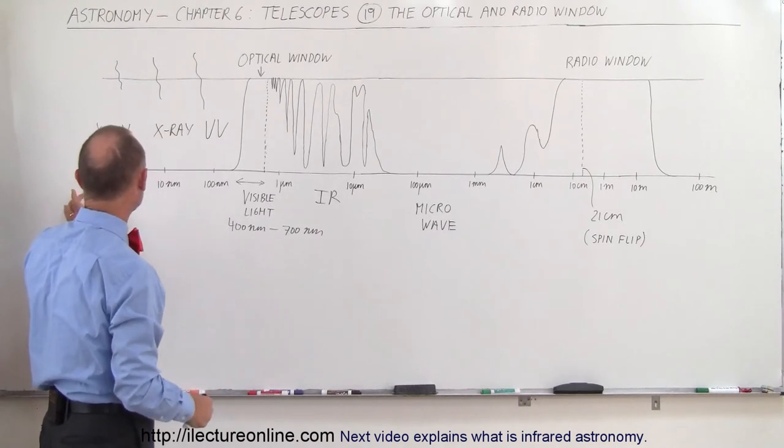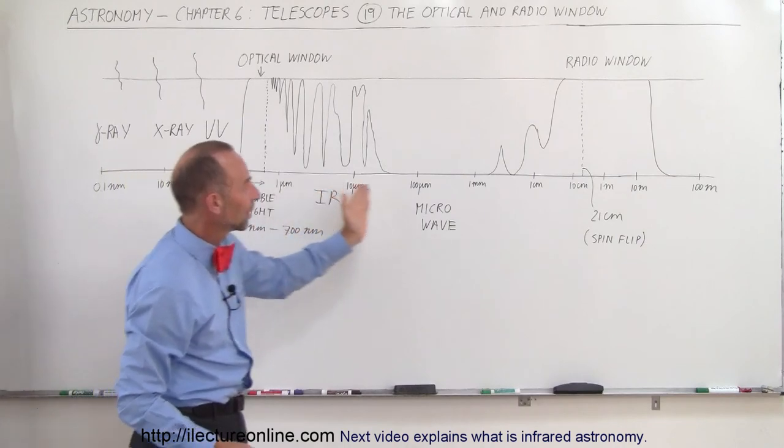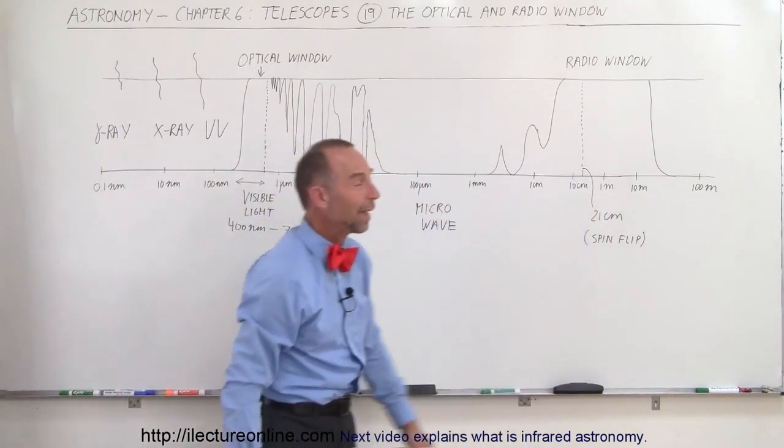Notice that this is a logarithmic scale. So we start at the very minute 0.1 nanometer—that's in the X-ray, gamma ray radiation band. You can see how it gets bigger and bigger here until finally we get into the radio band.